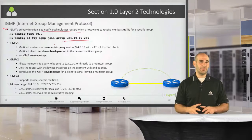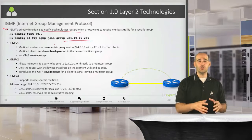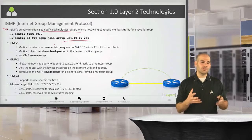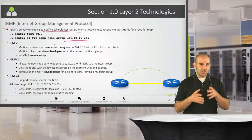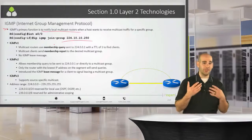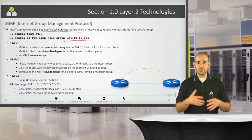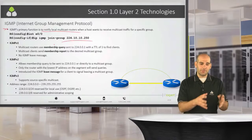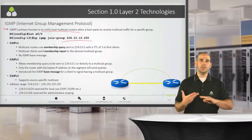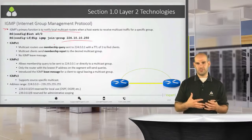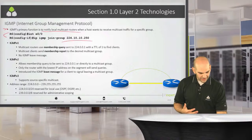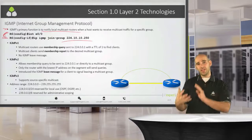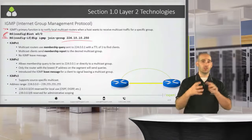In the CCIE version 5 lab exam, you're not going to have any hosts, desktops, or laptops that actually need to be enabled for this. It's going to be a router, an SVI on a switch, or a Layer 3 port on a switch — some type of router or switch port that will have to join to the specific address Cisco gives you. This is the command syntax you're going to use to join that interface to a particular group address.